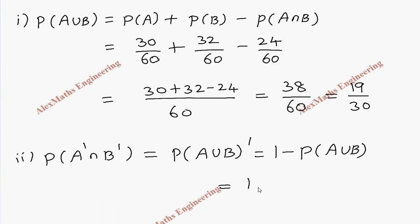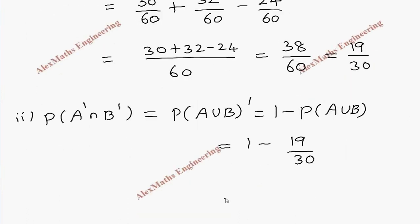So it is 1 minus 19 by 30, as we just calculated P of A union B. By taking LCM, it is 30 minus 19 over 30, so totally this is 11 by 30.